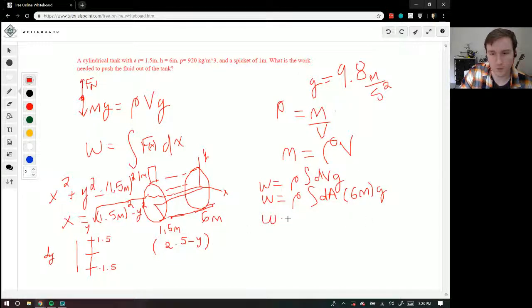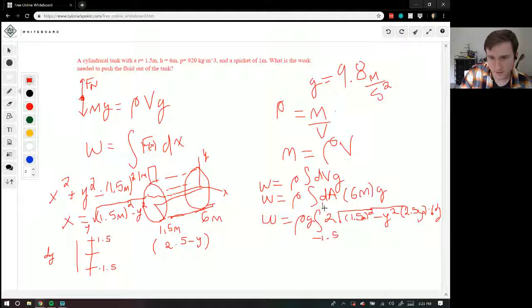And we get that the work is equal to rho times the integral of, since we did the square root, the square root would only be half of our circle. So we need 2 times the square root of 1.5 meters squared, minus y squared, times 2.5, 2.5 minus y. That's not squared. Times 6, I'm going to move my g out here, times dy. And we're going to go from negative 1.5 to 1.5.